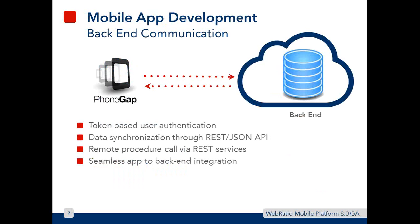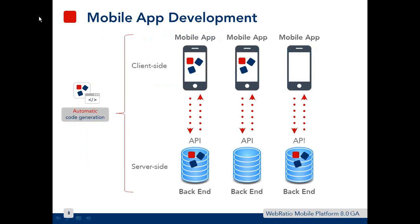The mobile app development process includes backend communication. The PhoneGap app — the container we saw in the previous slide — communicates with the backend using token-based user authentication. We also included a data synchronization algorithm using REST and JSON APIs, with calls to remote procedures using REST services. Finally, we introduce and integrate seamless app-to-backend integration, with all available combinations automatically generated by WebRatio.